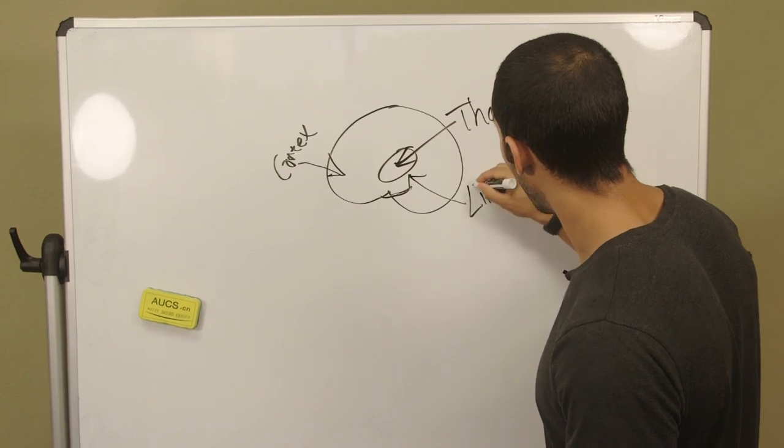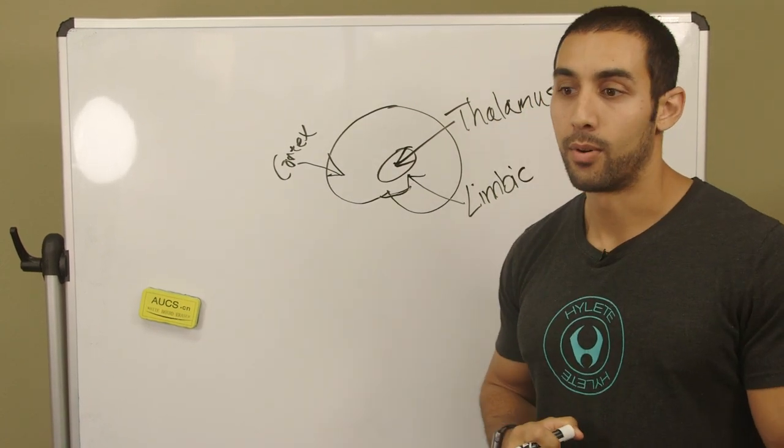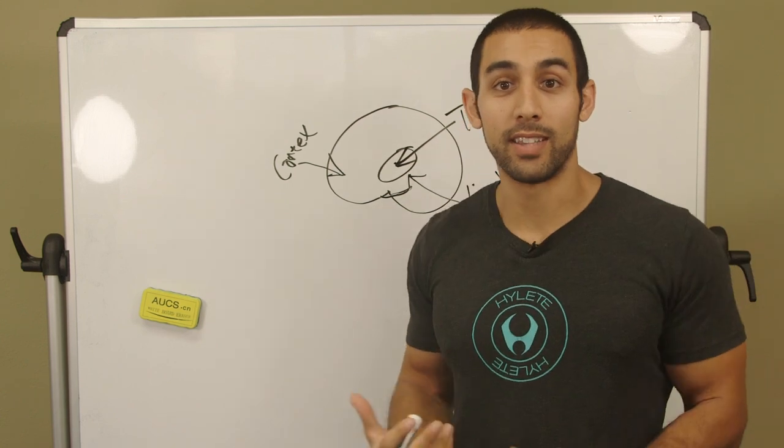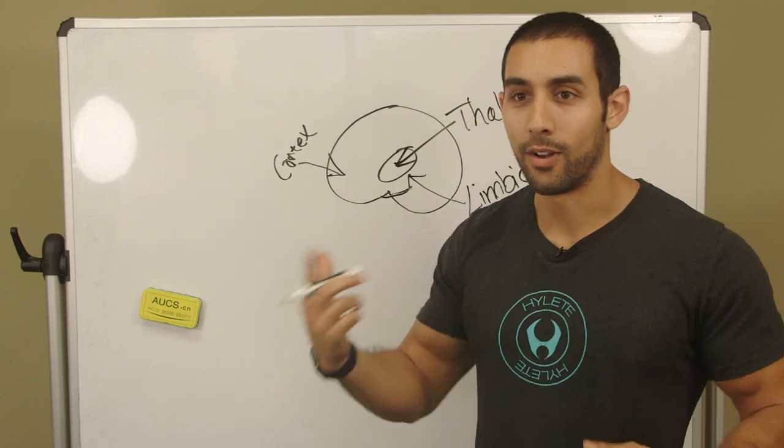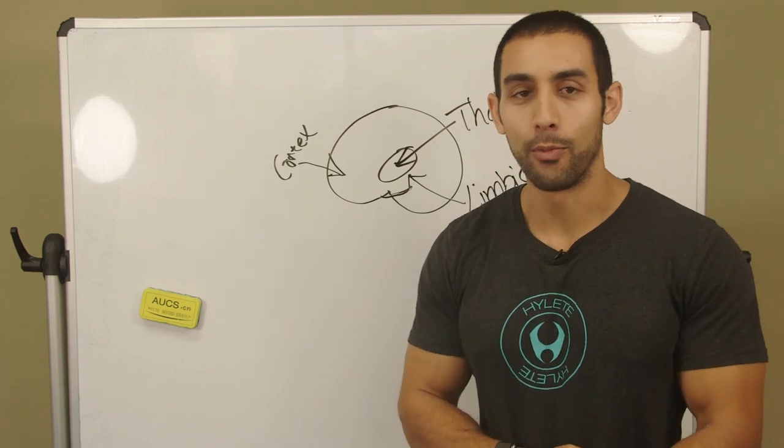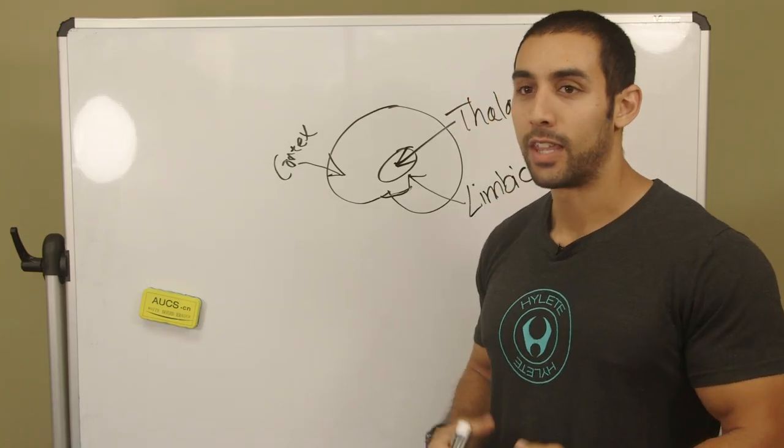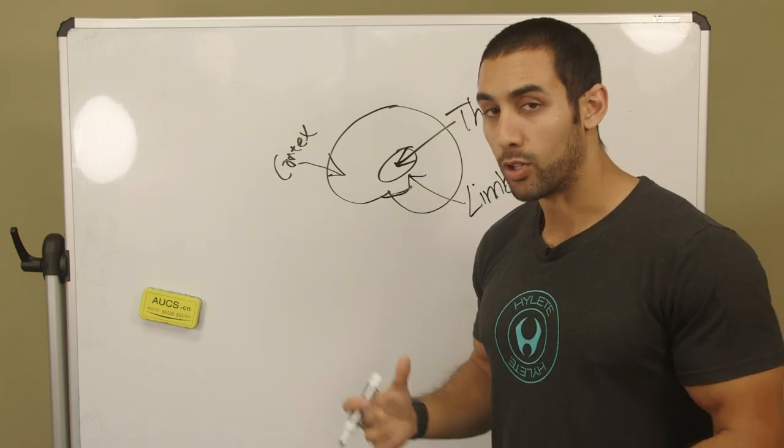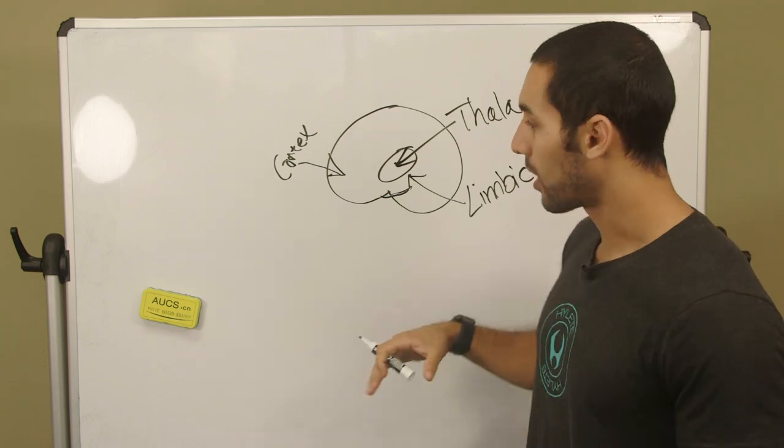You also have signals that go here, this is your limbic system. Your limbic system is that emotional part of the brain. Let's say for example you're on a plane and you feel a little bit of turbulence. Immediately you get this feeling of anxiety and fear, and then all these movies you've seen of planes crashing and whatnot start playing off in your head, in your imagination.